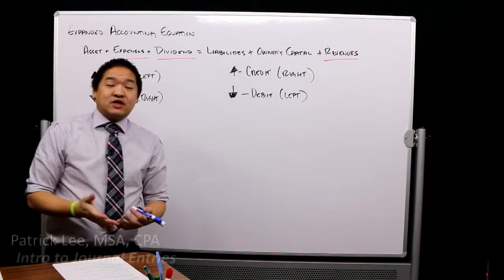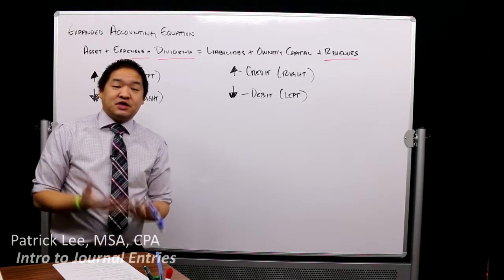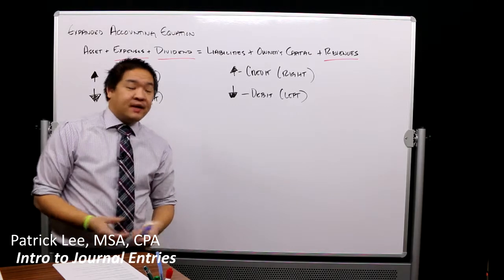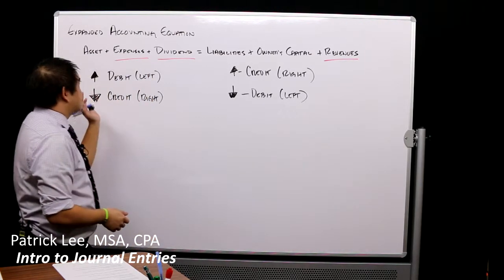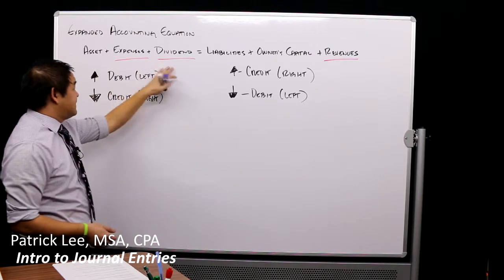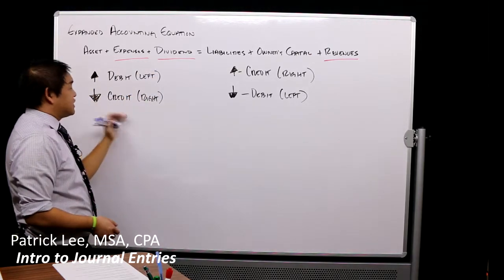All right, in our last lesson we're going to talk about journal entries. Now, journal entries is kind of the backbone of accounting. So remember in the last lesson we talked about increases in asset expenses and dividends are debits, decreases are credits.